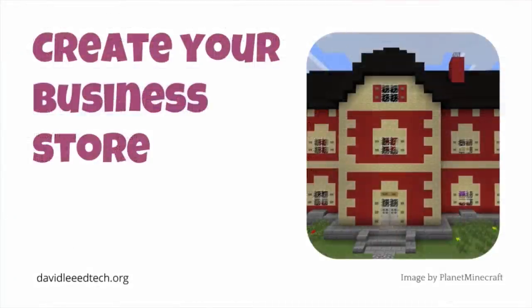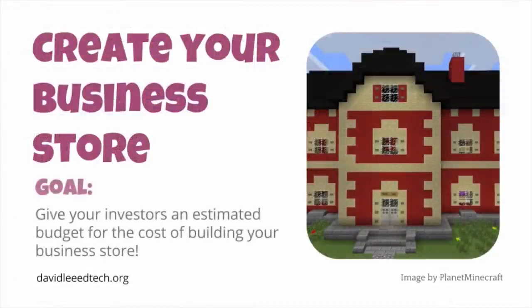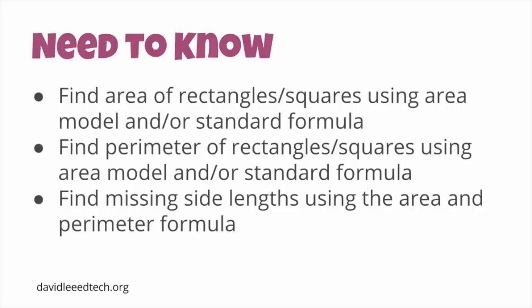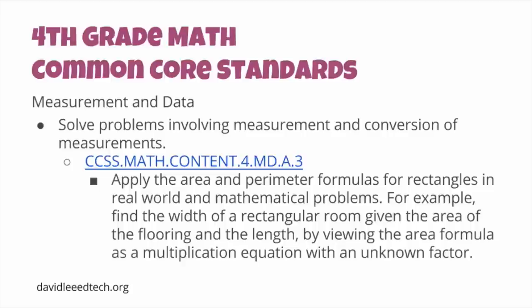The next portion of the project involved the following objective: students would give their investors an estimated budget for the cost of building their business's store. Students used this driving question for this portion: How will you as an entrepreneur find the estimated budget for building your business store? The need to know consisted of finding the area and perimeter of rectangles and squares, and finding the missing side lengths using the area and perimeter formulas. These skills incorporated the fourth grade Common Core Mathematics Standard Measurement and Data 8.3, which states students will be able to apply the formulas in real world mathematical problems.